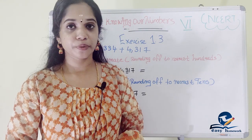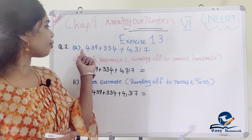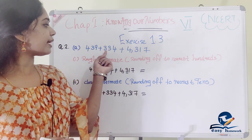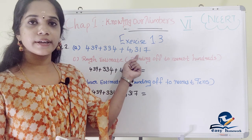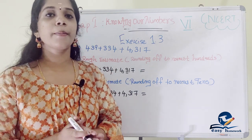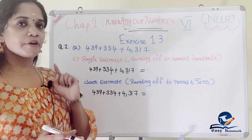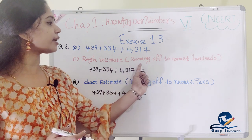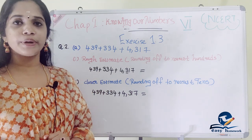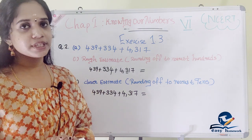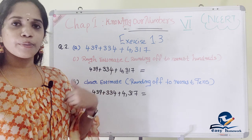Now let's go to question number 2. The first question is 439 plus 334 plus 4,317. We are going to do a rough estimate by rounding off to the nearest 100s, and then we are going to round off to the nearest 10s.